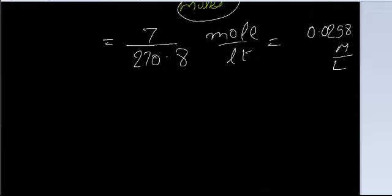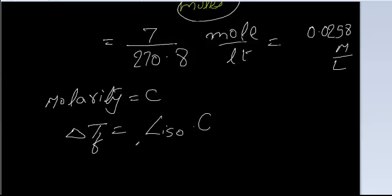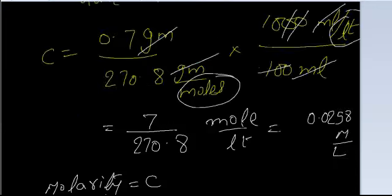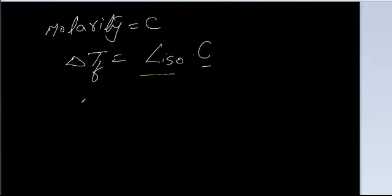Why did we calculate molarity? We calculated C because we need to calculate a freezing point depression value, delta Tf. To calculate that, we need C. The Liso value for both the drug and the sodium chloride is 3.4. So delta Tf equals Liso times C, which is 3.4 times 0.0258, giving us a delta Tf of 0.08 degrees centigrade.